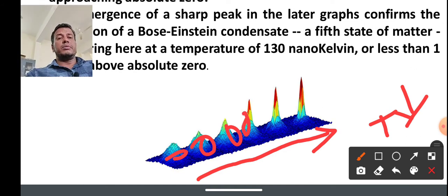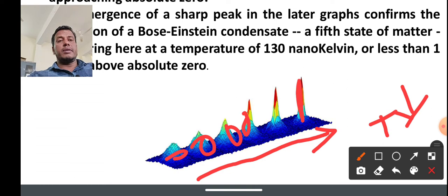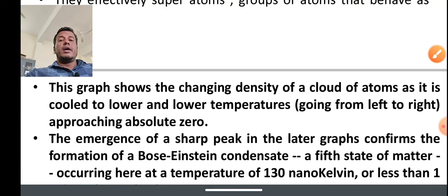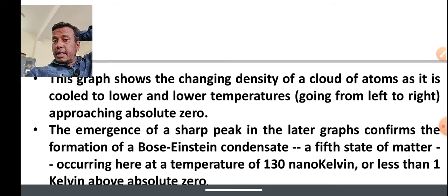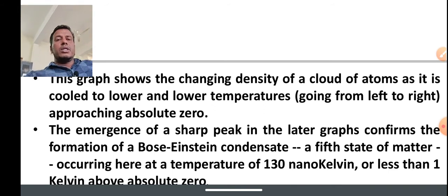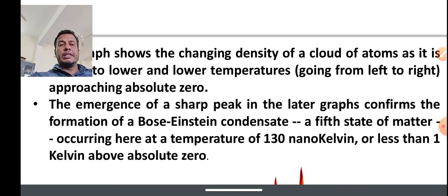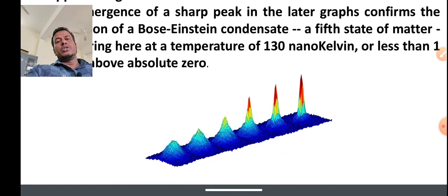At very low temperature, there is maximum accumulation that can occur. This approaches absolute zero. The emergence of a sharp peak in the graph confirms the formation of Bose-Einstein condensation, the fifth state of matter, occurring at the lowest temperature, 130 nanoKelvin, just about absolute zero.